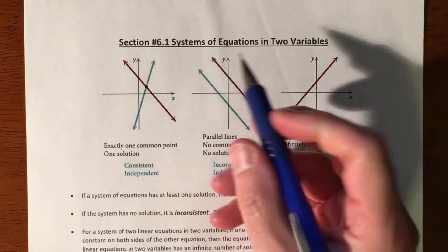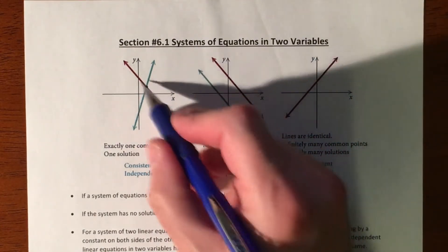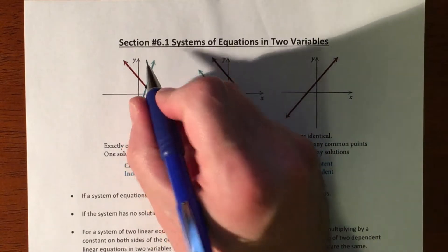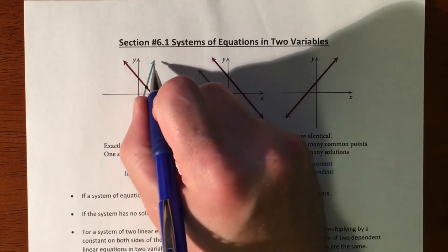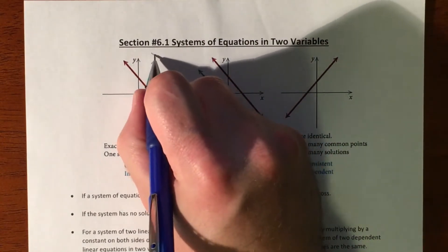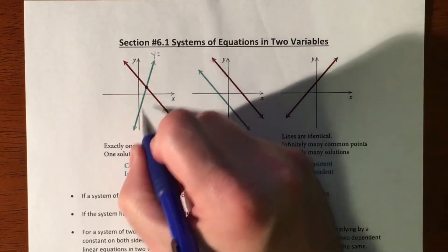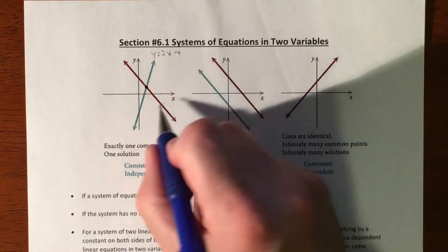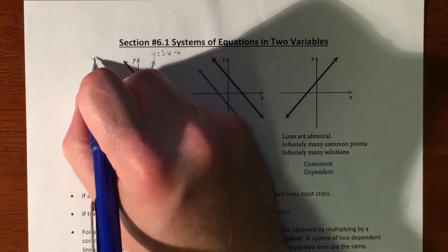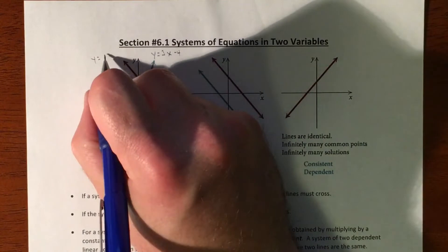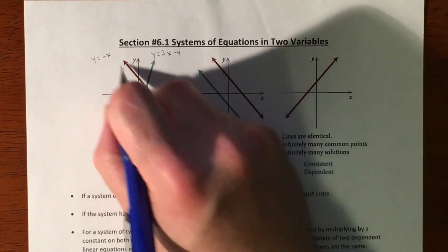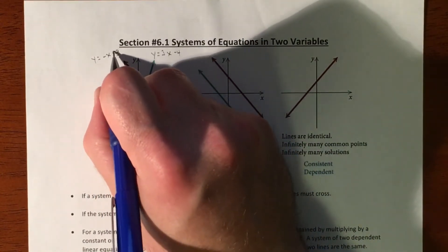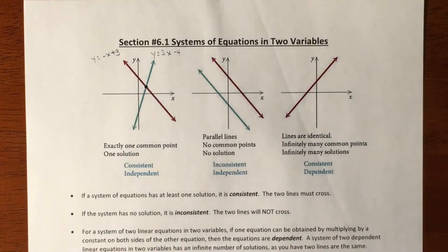You have these three different situations, and the idea is you have two equations. So you have something like y equals 3x minus 4, and then you have another line like y equals negative x plus 3. You're trying to find the solution to this. So what does that mean?